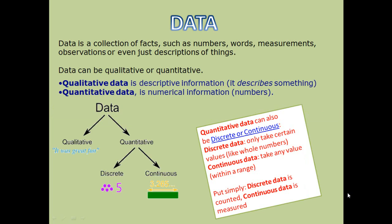Data can be qualitative and quantitative. Qualitative data is descriptive information, such as 'I had great fun.' When you present data in the form of numerical information, it is known as quantitative data.